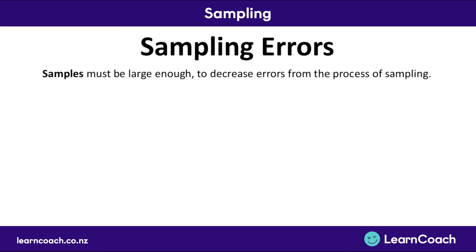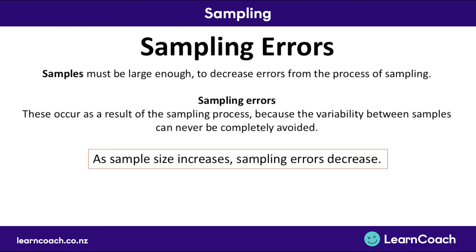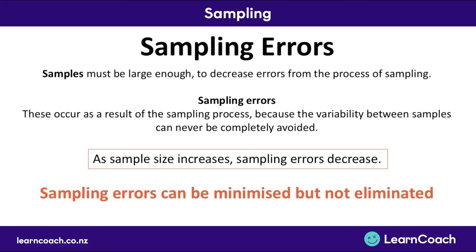Now, sampling and non-sampling errors. Samples must be large enough to decrease errors from the sampling process. Sampling errors occur as a result of the sampling process because variability between samples can never be completely avoided — there's always some random chance involved. If you pick five people randomly one day and five people randomly the next day, they'll probably be very different. Whereas picking two million people on each occasion yields much less variability. Sampling errors can be minimized by increasing sample size but cannot be eliminated completely.